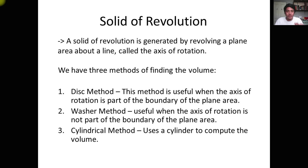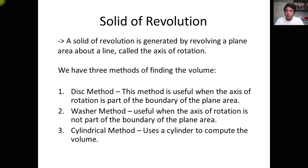If we have two curves that intersect, we're going to get the volume of that intersection by rotating about the axis. When calculating area, we're only getting a sketch of a two-dimensional graph. But in solid of revolution, we need to imagine what shape these two curves will form when we rotate them about a certain axis.